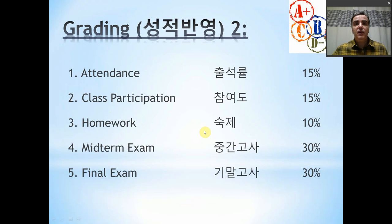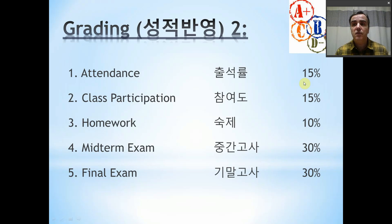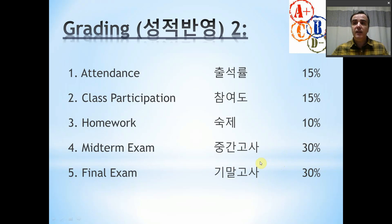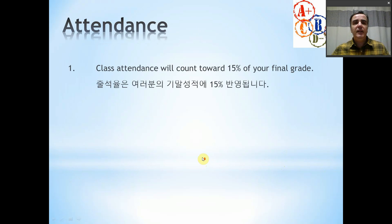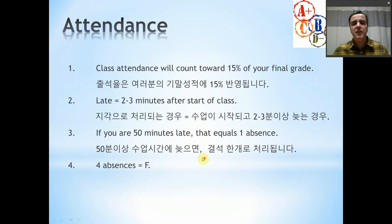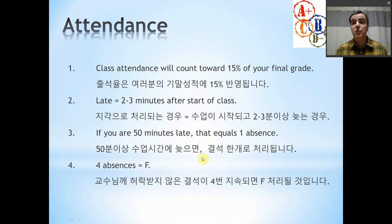The grading in the class is made up of five components. First is attendance, which is 15 points. Second is class participation, which is 15 points. There will be two homework assignments for 10 points total, so five points for each assignment. 30 points for your midterm exam and 30 points for your final exam. Please everybody read my class attendance rules and be clear about these rules before we start the semester. We've got rules about lateness, being 50 minutes late, and about four absences.